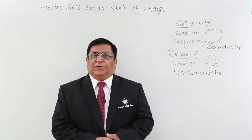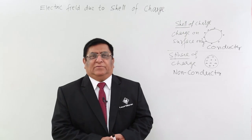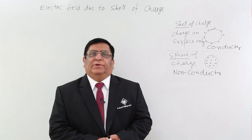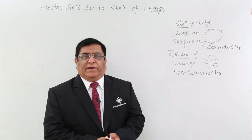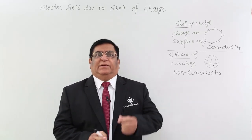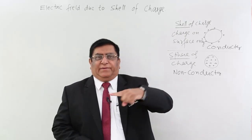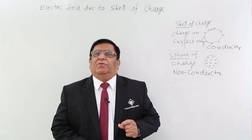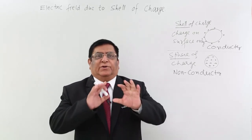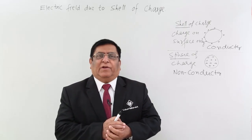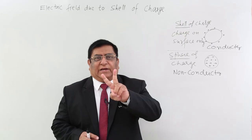We are doing Gauss theorem and with the help of Gauss theorem we are trying to find out electric field due to different types of charge distributions. We have already done charge distribution in a straight line, charge distribution in a plane, and today we will do another charge distribution which is very common — charge distributed over a sphere. When we call it over a sphere, there are two categorizations.